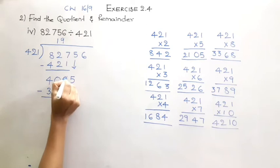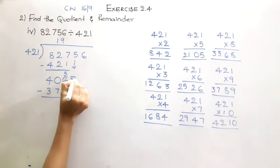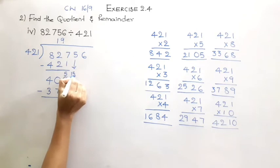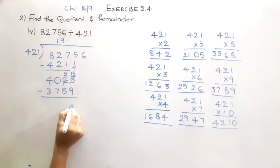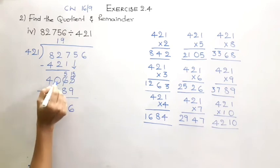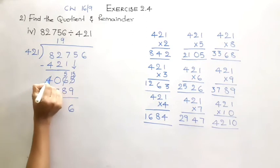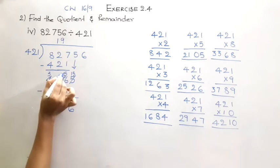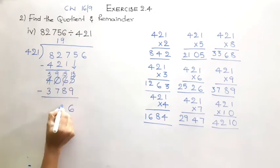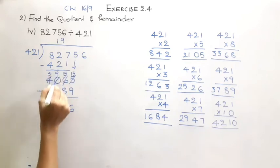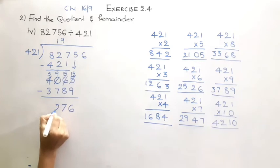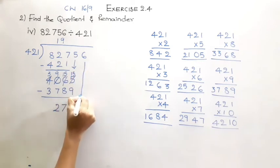Now let us do the subtraction. As we can't subtract 9 from 5, we are going to borrow, so that this will become 15. 15 minus 9 is 6. Here also we can't subtract 8 from 5, so being 0 we have to borrow from the next place, so this will become 3 and this will become 10, giving 1 to the 5 to make it 15. Hence 15 minus 8 is 7, and 9 minus 7 is 2.